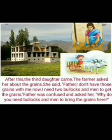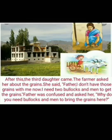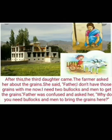Now we move on to the third daughter. After this, the third daughter came and the farmer asked her about the grains. She said, 'Father, I don't have those grains with me now. I need two bullocks and men to get the grains.' Father gave only a bag of grains to all three daughters, but now the third daughter needs a bullock cart — you know, a man riding a bullock cart, as shown in this picture.